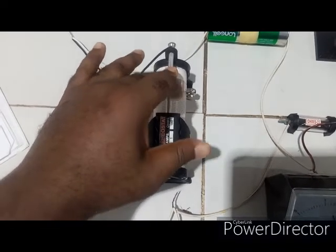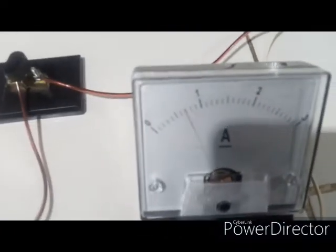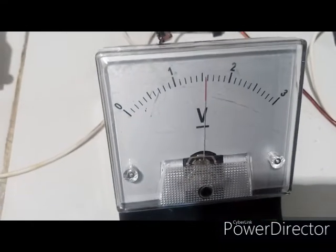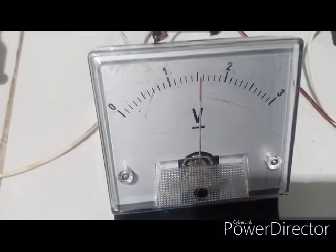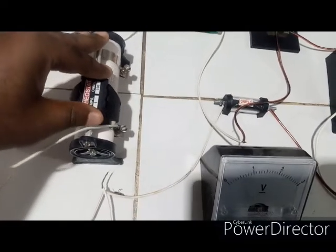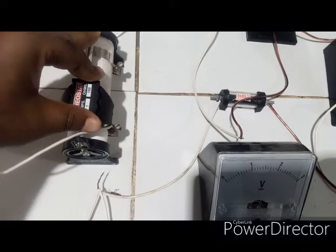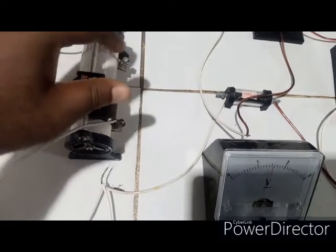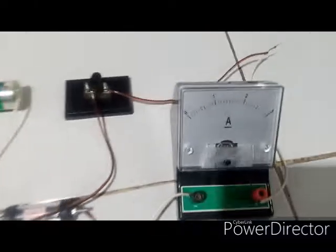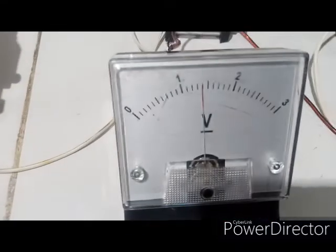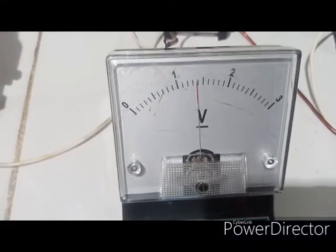So once I've done that, I will take my current reading here, I have 0.7 now and then here for my voltmeter I have 1.55. Having also done that, I will reduce it so that I could get lower current. So here is what I have: 0.6 and here is my V, 1.4 approximately.